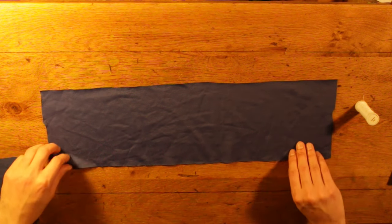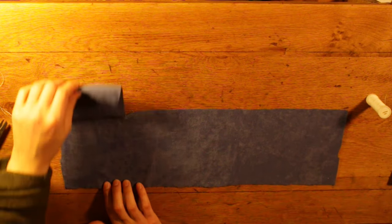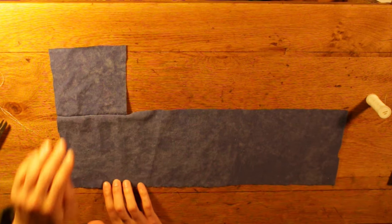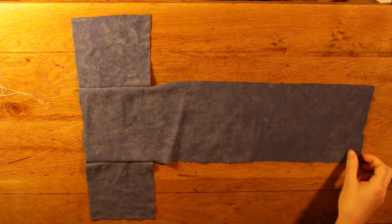Lay the rectangular piece face up and line the side of one of the squares on it face down, so the outsides are touching each other. Sew these together and then do the same on the other side with the other square, also face down. And when you're done, you should have this long T shape.